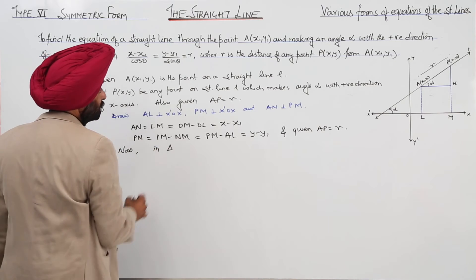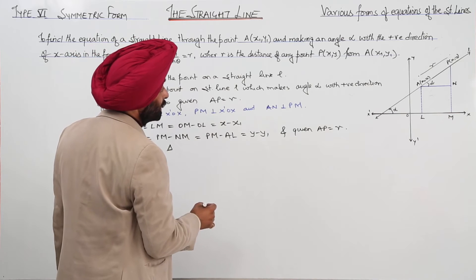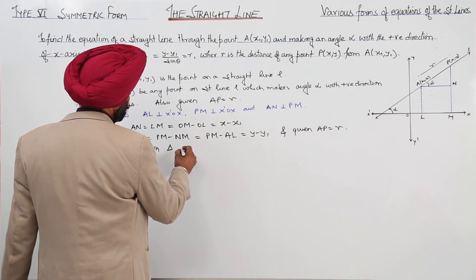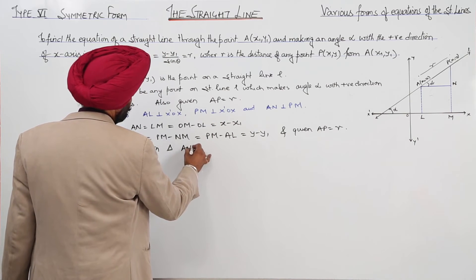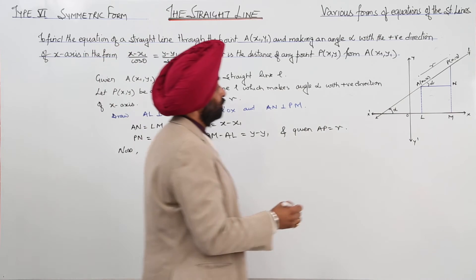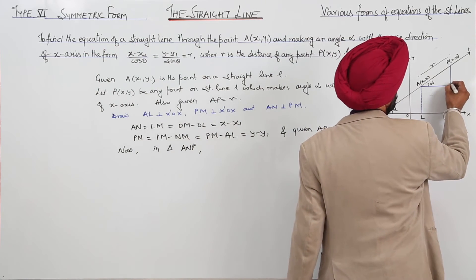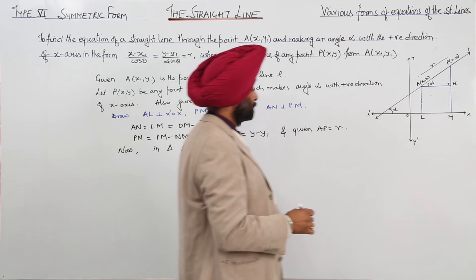Now, in triangle ANP, when we have drawn a perpendicular, it means this angle is 90 degrees.